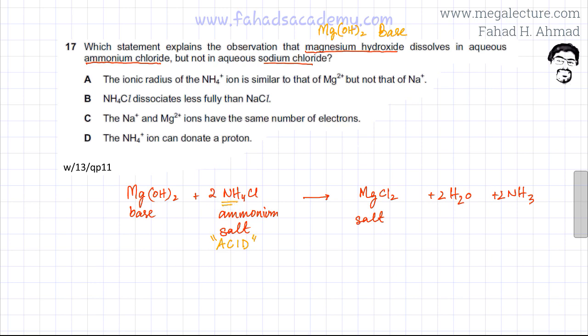If you look at this NH4+ ion, it is capable of behaving as an acid. The reason is because it can lose an H+ and produce NH3, which is ammonia, and it can produce an H+ ion.